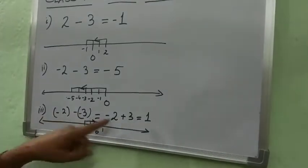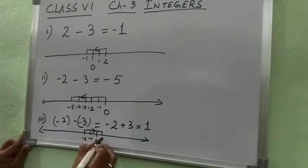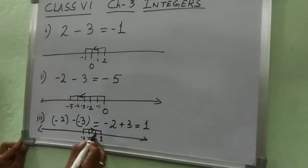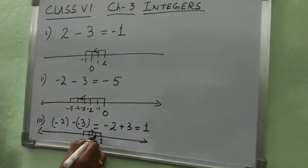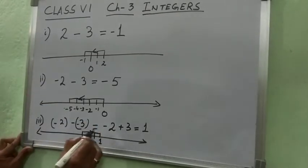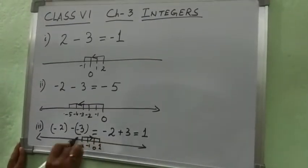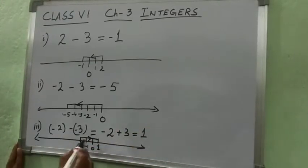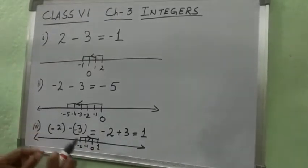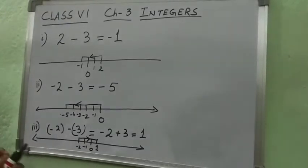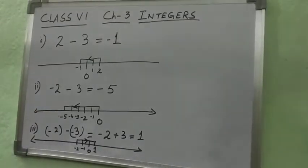So the answer is 1. Children, you see that the answer is plus 1 and the direction gives result 1 after moving. So how to do it: always you have to start from 0, either in the positive or negative direction as given in the question. Minus 2 means 2 steps left side. And plus 3 means again 3 steps forward to the right. When representing on the number line, which direction you put the arrow is very important. This is the subtraction of integers and how to represent on a number line.